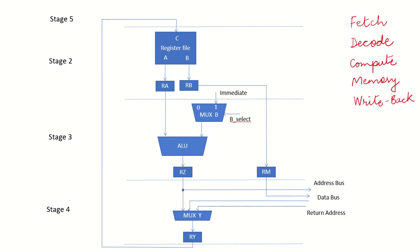We have assumed a five-stage organization of the processor, meaning each instruction is executed in five stages. The first stage is to fetch the instruction from memory and bring it to the processor. At the end of the fetch cycle, the instruction is brought from memory and put in the instruction register IR.